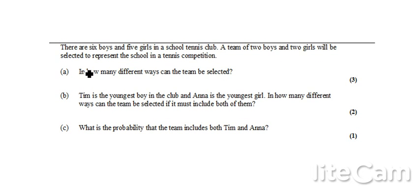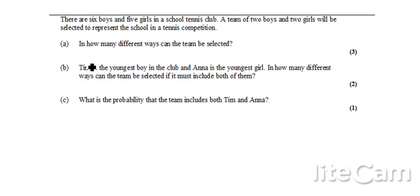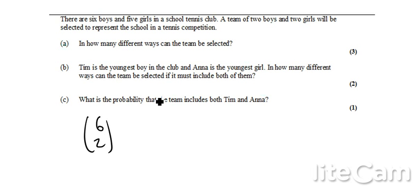Question number 2: 6 boys, 5 girls in a school tennis club. A team of 2 boys and 2 girls will be selected to represent the team in a tennis competition. How many different ways can a team be selected? Well, I've got to have 2 boys out of those 6 boys, so I've got 6 choose 2, and I've got to have 2 girls from those 5 girls. Therefore, 5 choose 2. So those are all my possibilities. So 6 choose 2 times 5 choose 2 equals 150.